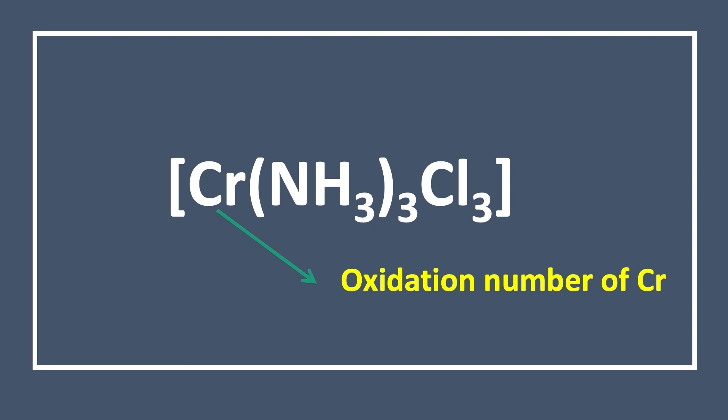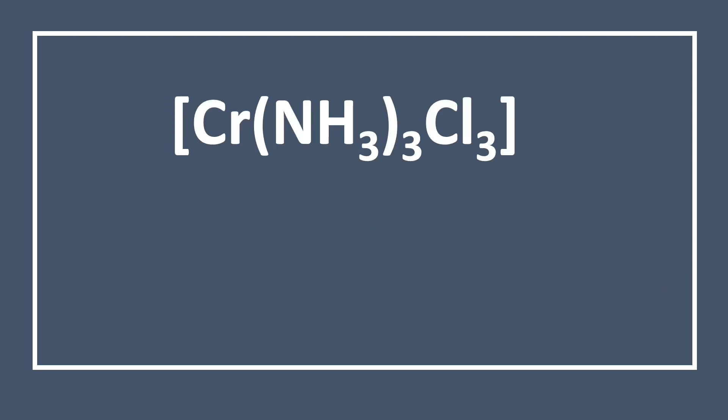To find the oxidation number, certain steps are followed. We let chromium be X, and since this is a neutral compound, the algebraic sum must be equal to zero.